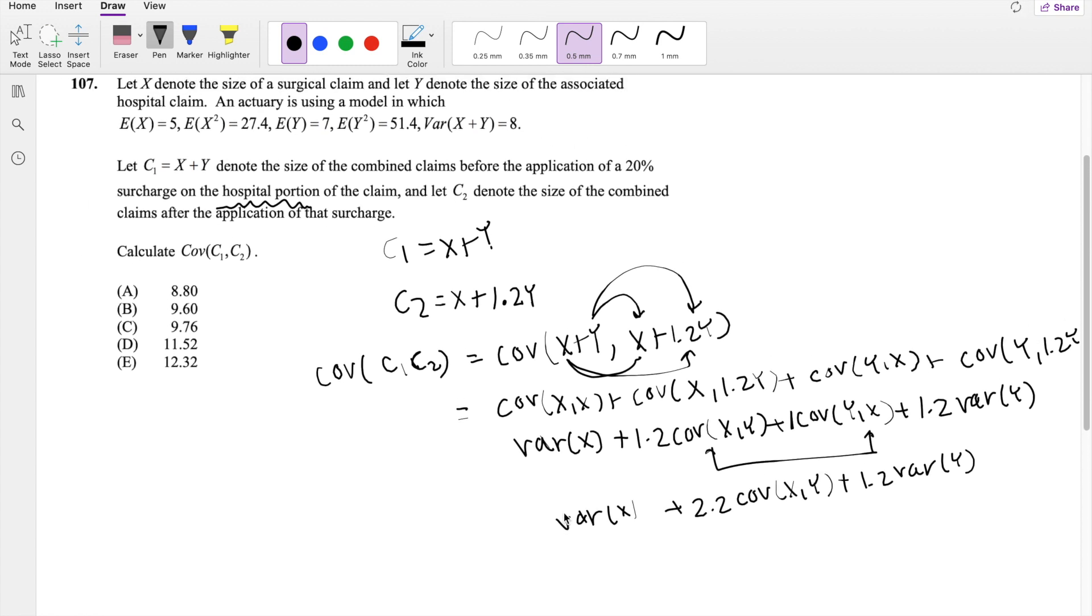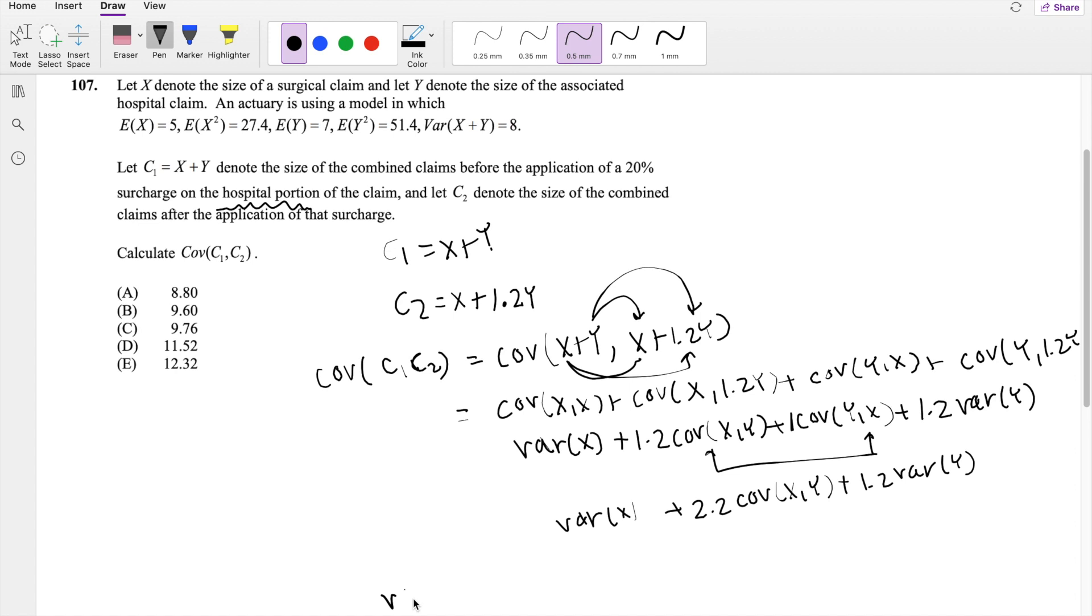So we don't really know what variance of X is, but we know the formula for variance is equal to the second moment minus the first moment squared.